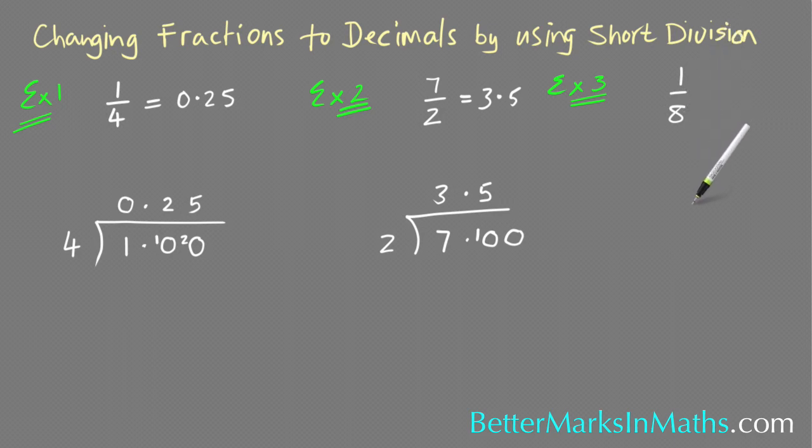Example three: one over eight, or one eighth. Change that to a decimal. Again, setting up the short division: bottom number on the outside and the top number on the inside. Put a point, and this one you need a couple of zeros, and then a point there. How many eights in one? There are none. Because you haven't used that one, you carry it here. How many eights in ten? There's one, and then there's two left over.